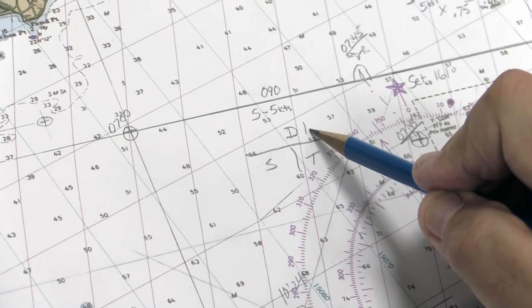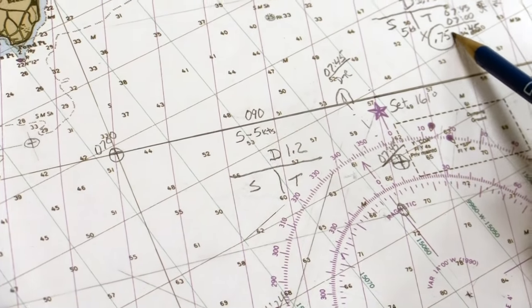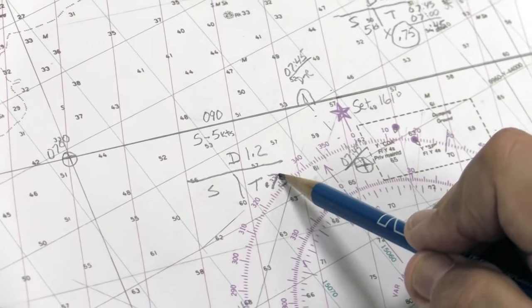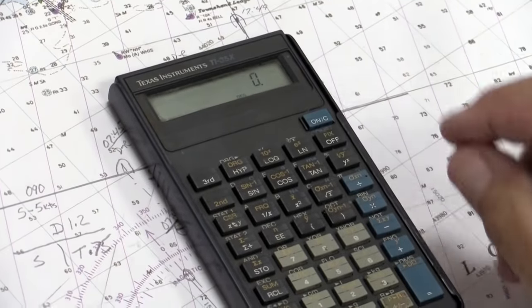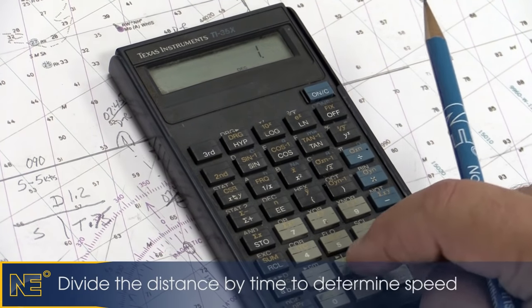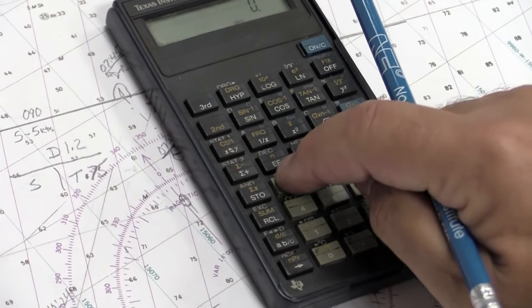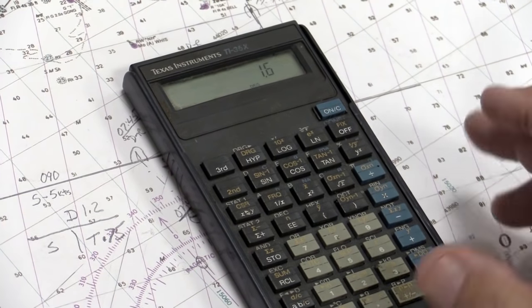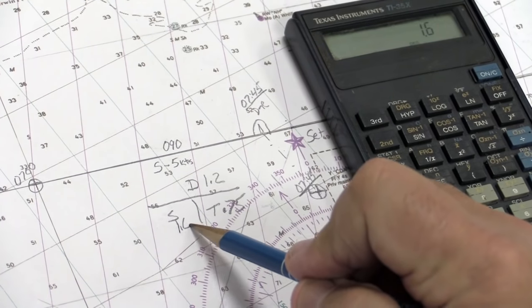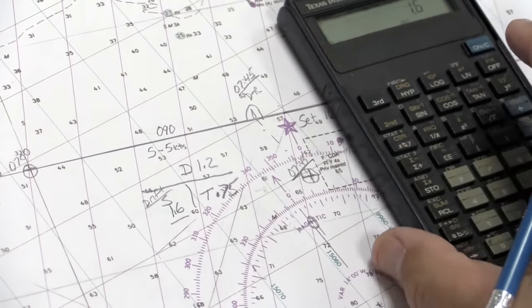And that distance is 1.2 miles. Distance was 1.2 miles. Our time underway for this problem has been the same, it's 0.75, 45 minutes. So we take our calculator, we take our distance of 1.2 miles, divide it by our time 0.75, and we get a speed of 1.6 knots. That speed is our drift. That's how fast the current is going.